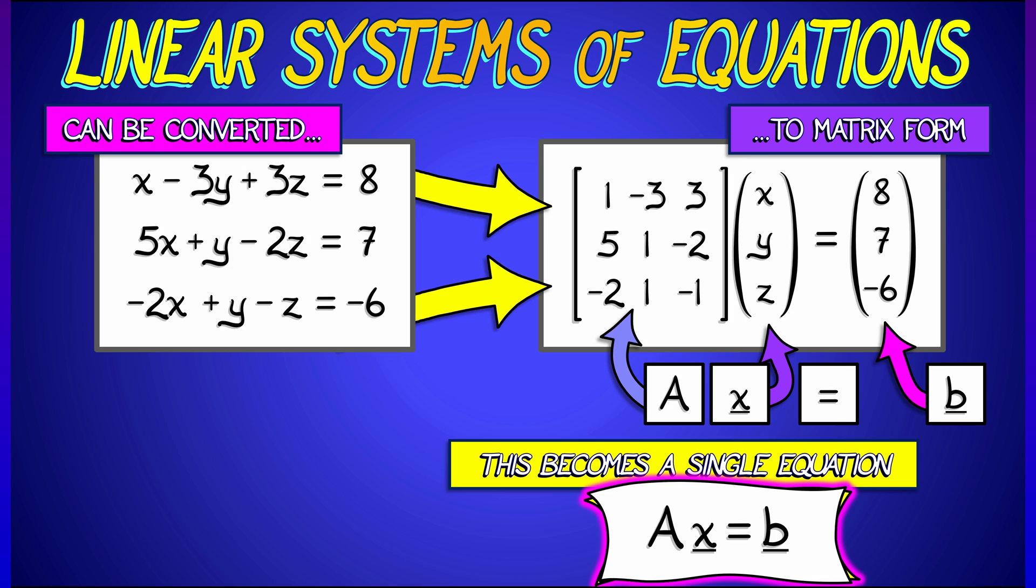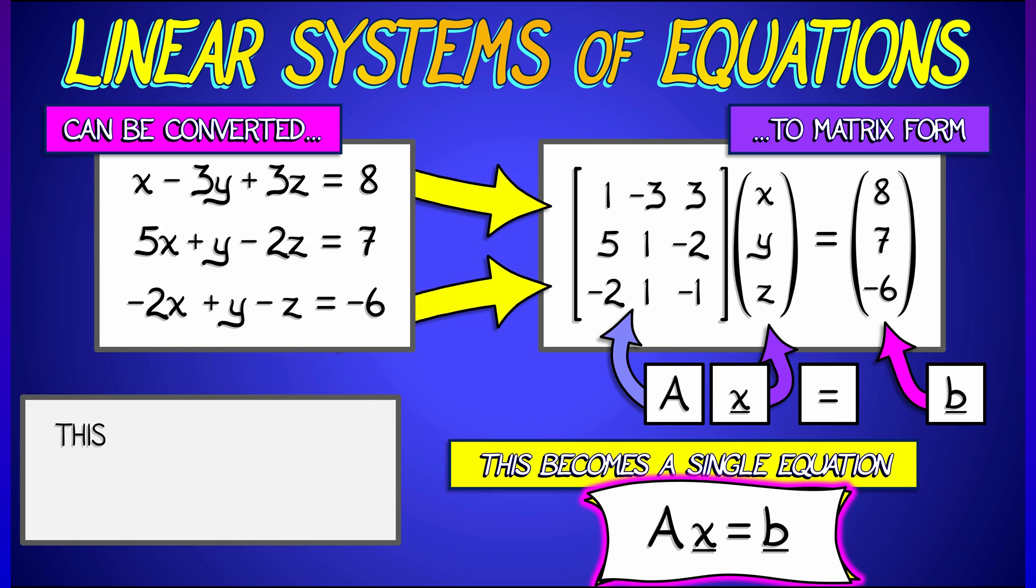So instead of three equations, three unknowns, we have one equation, one unknown, but it's a vector.